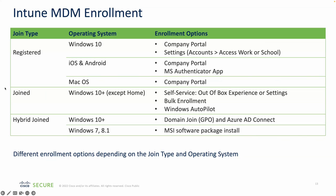For the Joined type on Windows 10 plus (excluding Home edition), enrollment options include a self-service out-of-box experience, the Settings menu, bulk enrollment, and Windows Autopilot. For Hybrid Join on Windows 10 plus, the join happens via domain join and Group Policy state using Azure AD Connect. Windows 7 and 8.1 support is also available but requires an MSI software package install.